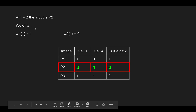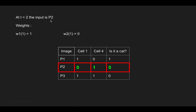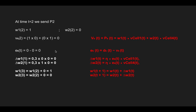Now we move to T equals 2 and image 2. The weights are the same as before since they were not updated. This time we are going to send signals 0 and 1 and see if we get the desired output of 0. When we calculate the output, it is equal to 0. So the error is 0 again, and therefore there will be no delta W1 and no delta W2 — they will both equal 0, and the weights stay the same one more time.